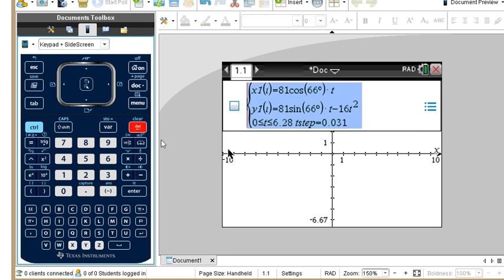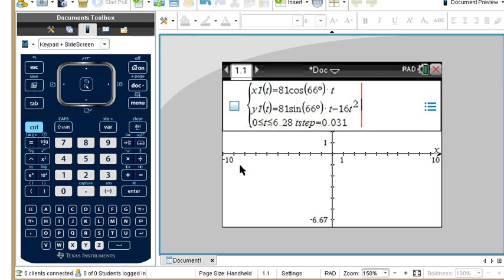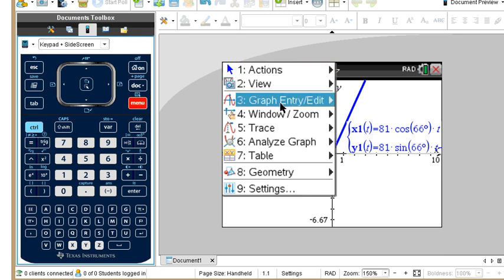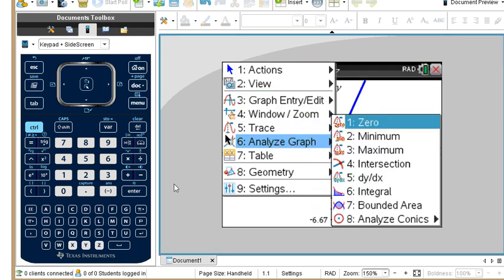So anyway, we have this, check to make sure everything's right, press enter, and we see the initial part of the path of the football, except that we need to look at 150 feet away. You can just do graph trace from here. I'm going to go ahead and put a window zoom, window settings.